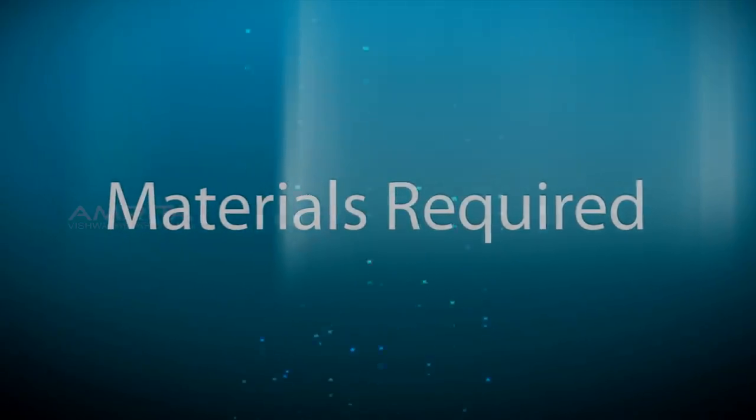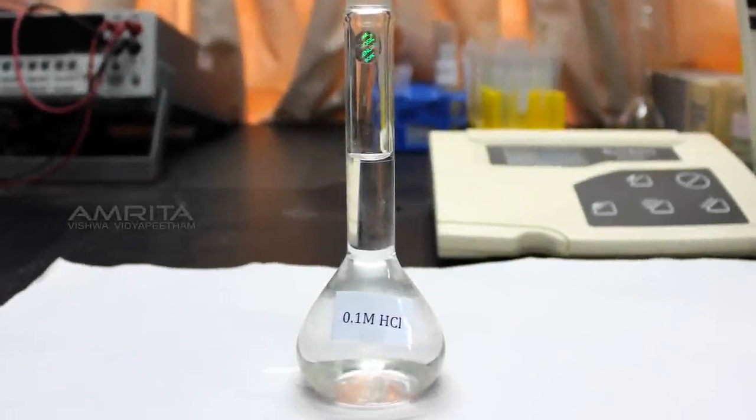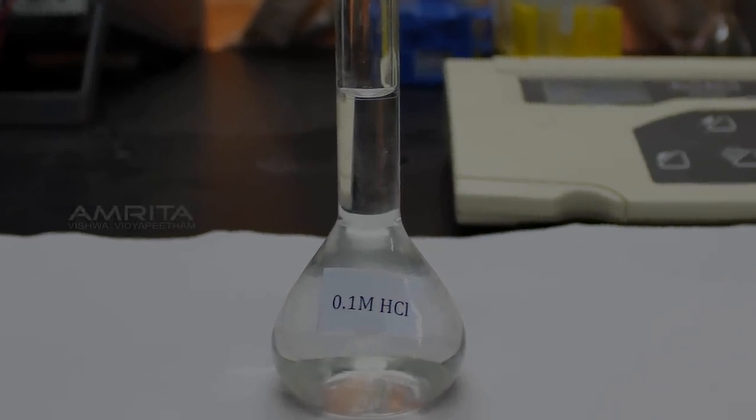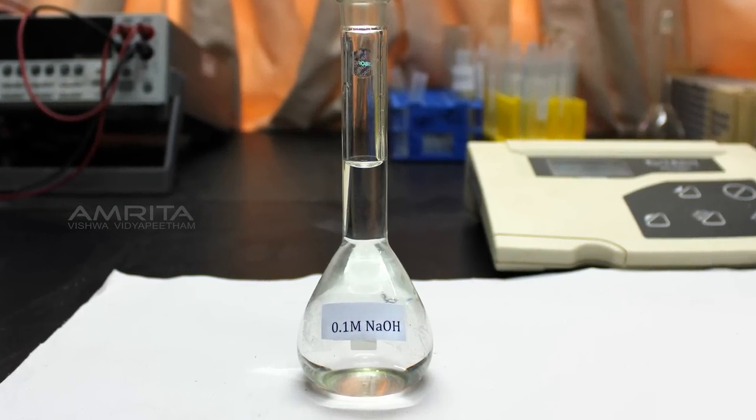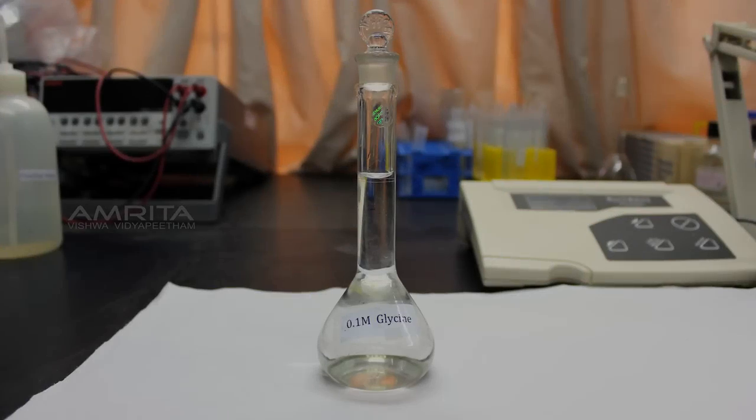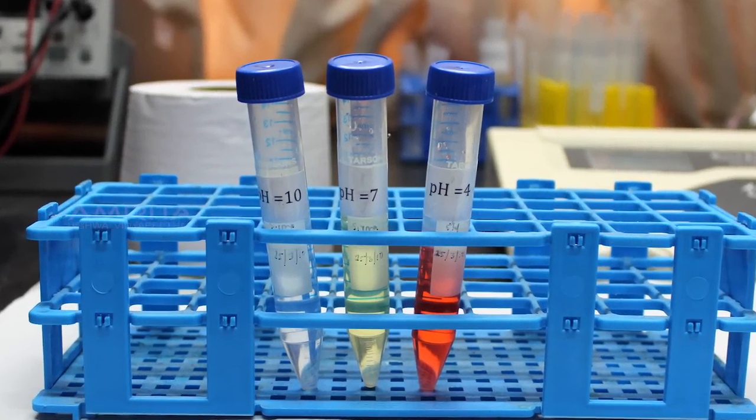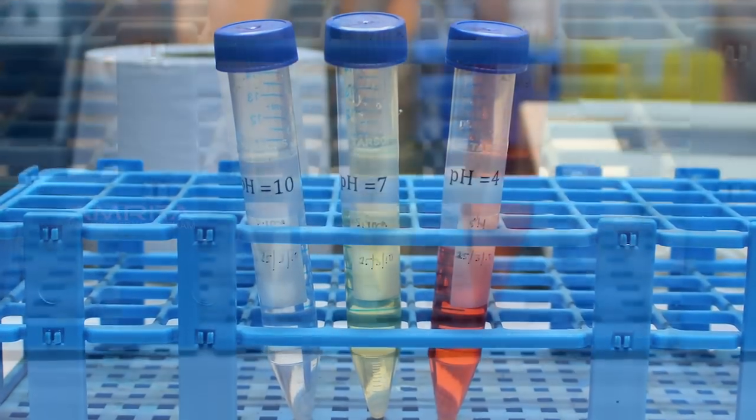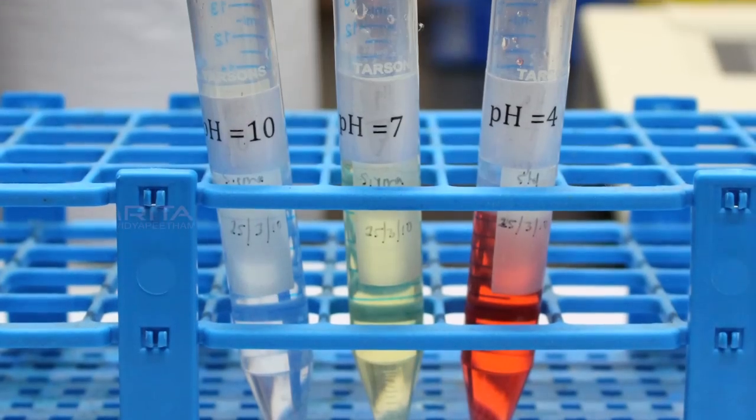Materials required: 0.1 molar hydrochloric acid, 0.1 molar sodium hydroxide, pH meter, 0.1 molar glycine, buret with buret stand, stirrer, standard buffers labeled pH equals 4, pH equals 7, pH equals 10